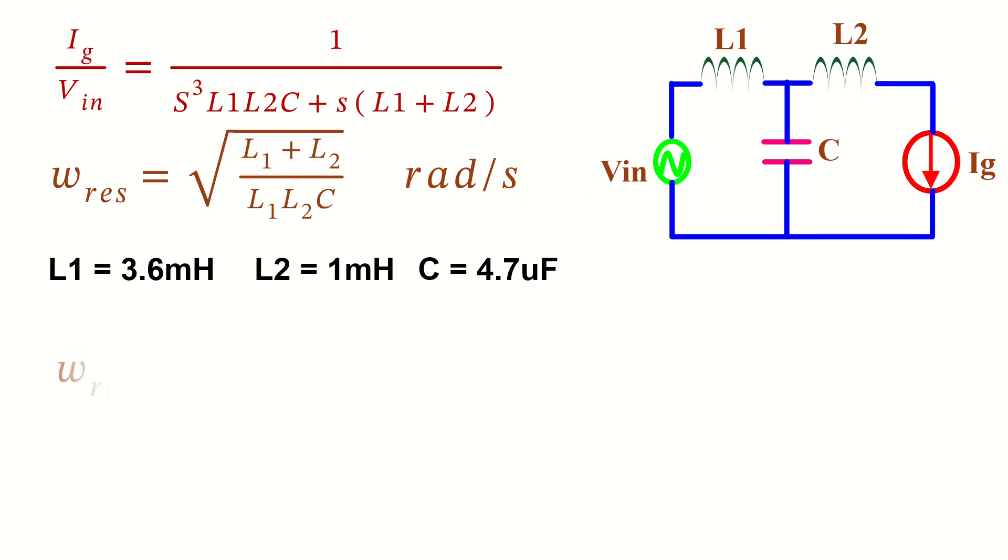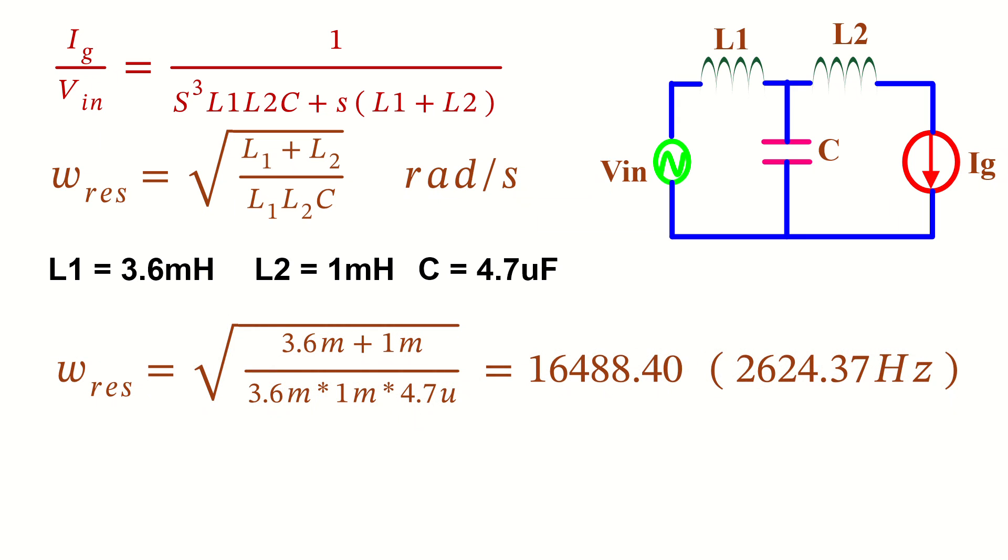If we substitute these values into the resonant frequency equation, the resulting resonant frequency is 16,488.4 radians per second or 2,624.37 Hz.